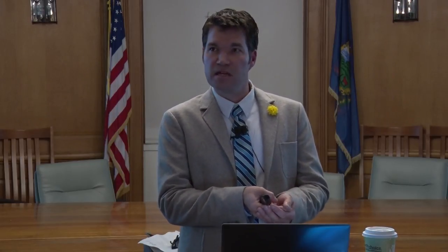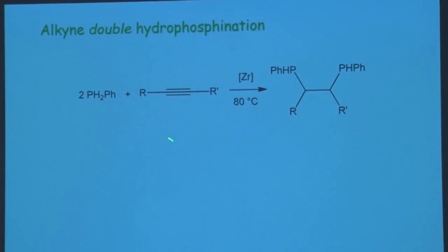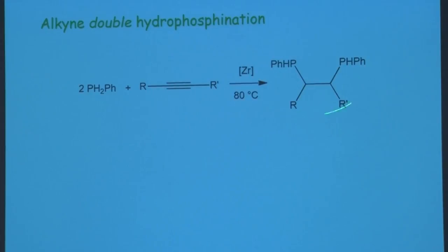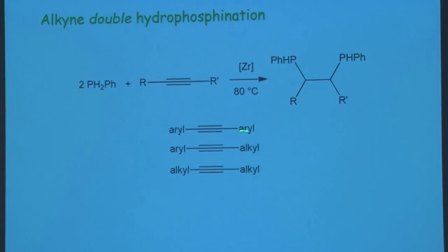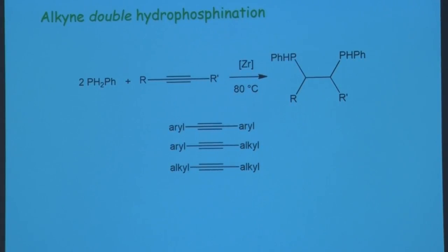Christine has been working on figuring out why we can do this chemistry that cannot be done by anything else — that continues to allow us to ask interesting questions. In the meantime, Christine has also been working on double hydrophosphonation: instead of two additions at phosphorus, two additions at the unsaturated substrate. Using internal alkynes with two organic substituents and no hydrogens, and adding two phosphines to make diphosphinoethanes. This has worked quite well with both aryl, alkyl, and dialkyl substituents on the alkynes.